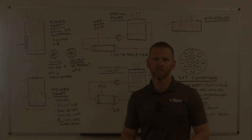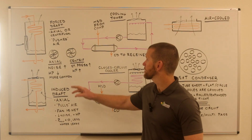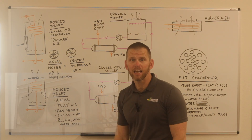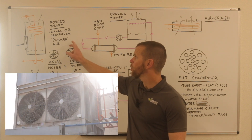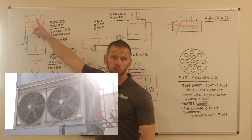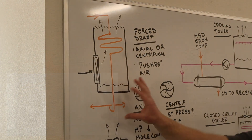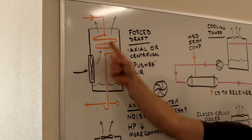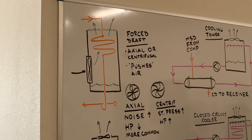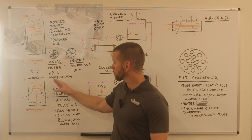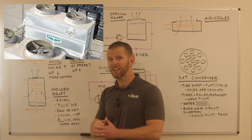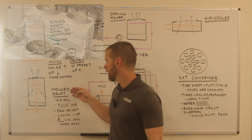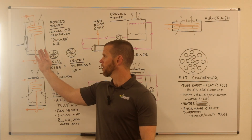One way that evaporative condensers are categorized is by whether they're forced draft or induced draft. In a forced draft condenser, we are pushing air through the coil — the fans are below, pushing air through the coil. Whereas in an induced draft condenser, the fans are at the top and instead of pushing air, it's pulling or drawing the air through the unit, so the air comes in the bottom and is drawn up through the top.